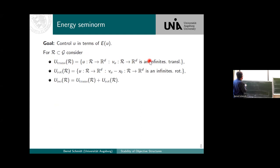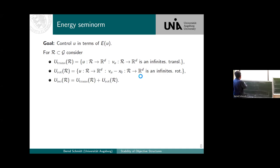An infinitesimal translation or rotation: an infinitesimal rotation is just given by a skew-symmetric matrix. I'll write this down explicitly, and the set of linearized isometries is then exactly this set here.